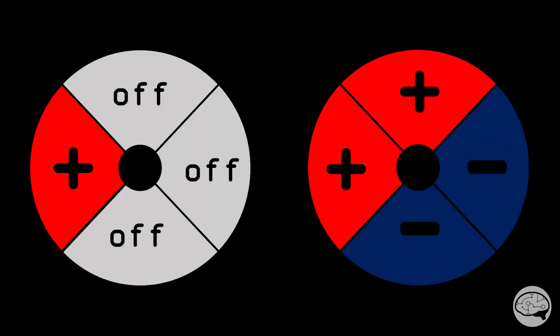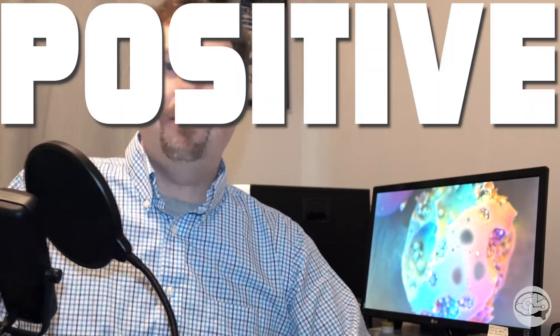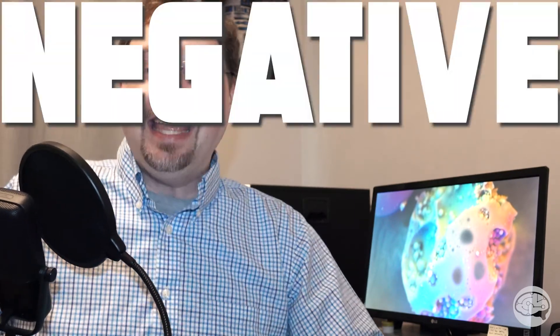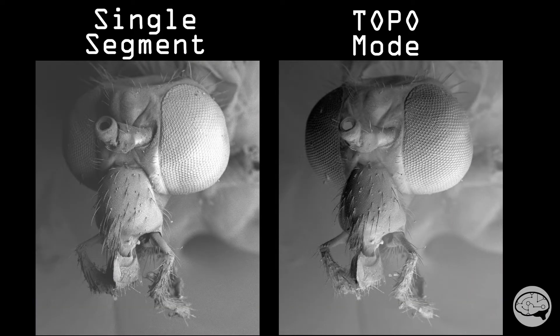First, instead of only collecting the signal from a single segment, we'll be using all four segments, but in different ways. In this case, we have A and D segments set to positive, and the B and C segments set to negative. So what does that mean, and why is that different from being off? Positive is additive. So if a segment is set to positive, signal from that segment will be added to the image. Basically, signal that hits that segment shows up as white. Negative is subtractive. That means that any signal that hits this segment will be subtracted from the image. Another way to think of it is that signal comes out as black in this condition. So why is this more desirable than the single segment collection? In this case, we're using all four segments and collecting a lot more signal. That's always great.